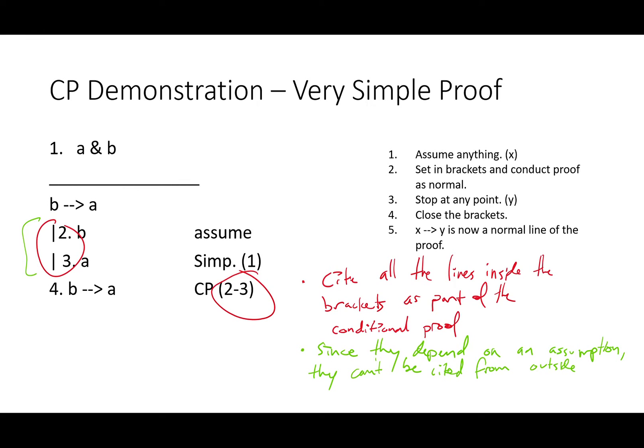Since all those things depend on an assumption, they can't be cited from outside. Even though that assumption here is actually true, we've still put it in brackets, set it aside, and said all of these things depend on an assumption. If our conclusion read if B then A and A, we would need to do the simplification rule again, outside of the brackets, in order to get our conclusion.